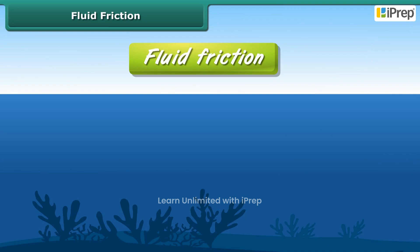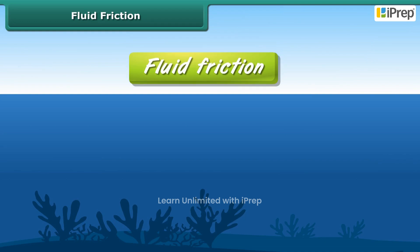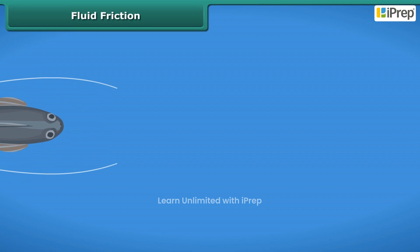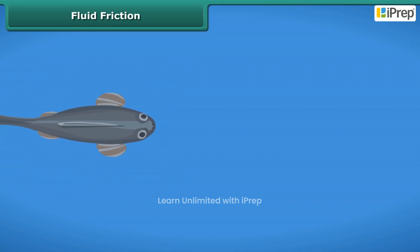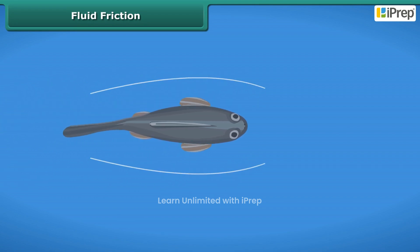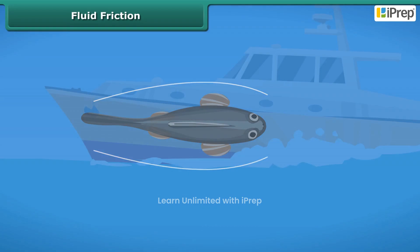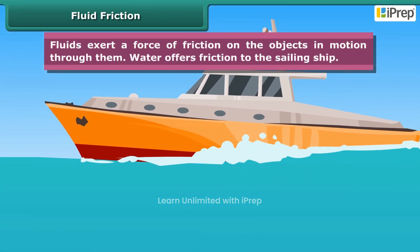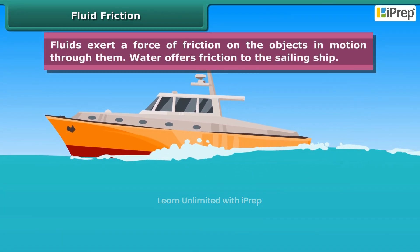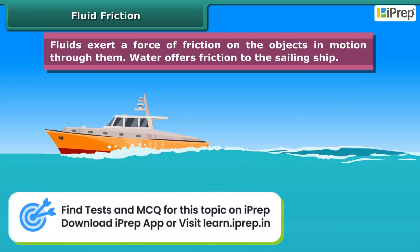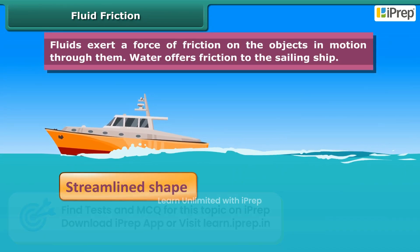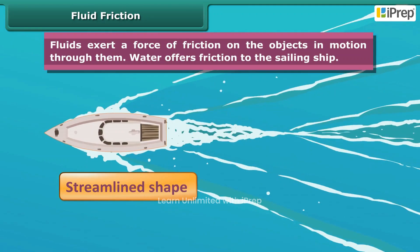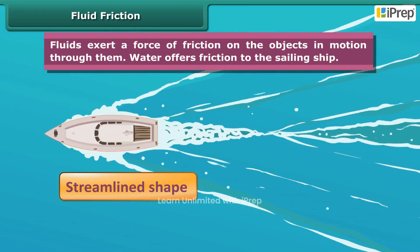Let us look at some examples of fluid friction. The streamlined shape of fishes helps them in reducing the force of friction between their body and the water through which they move. Boats and ships are narrow in front and sloping on sides. This is known as streamlined shape, which reduces friction from the fluid medium through which these objects move.